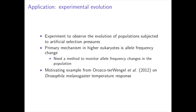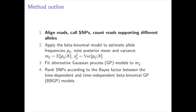In our paper, we introduce a GP-based method in order to model the allele frequencies across several generations of Drosophila melanogaster, and we identify the SNPs which are selected under natural selection. Having the high-throughput sequencing data, our method consists of four steps.